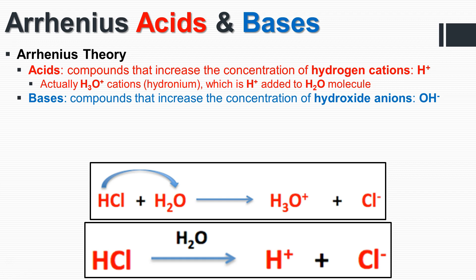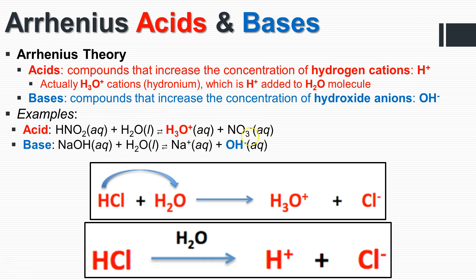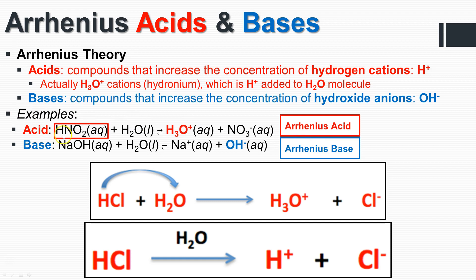A base, by the Arrhenius theory, is going to be a compound that increases the concentration of the hydroxide anion — the OH negative. For example, HNO2 plus water makes the hydronium cation plus the NO3 anion. Sodium hydroxide plus water makes the sodium cation plus the hydroxide anion. So HNO2 is the Arrhenius acid and sodium hydroxide is the Arrhenius base, because HNO2 increases the hydronium concentration and sodium hydroxide increases the hydroxide concentration.